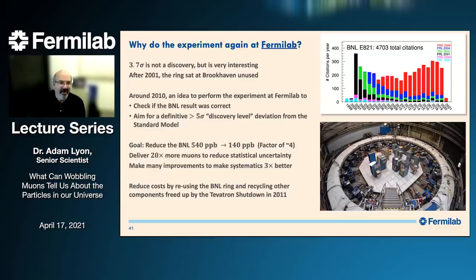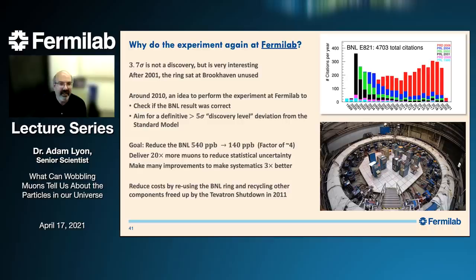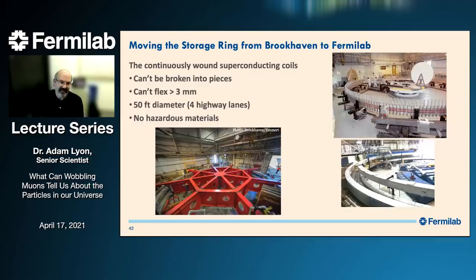The goal is to do this experiment here at Fermilab with a factor of four improvement in precision. That involves delivering 20 times the muons that Brookhaven had — we have a very powerful accelerator complex that can do that. We also make many improvements to reduce uncertainties by a factor of three. To reduce costs, we reuse the big expensive parts of the experiment from Brookhaven and also components freed up when the Tevatron collider shut down at Fermilab in 2011. We've actually recycled a lot of stuff from the Tevatron.